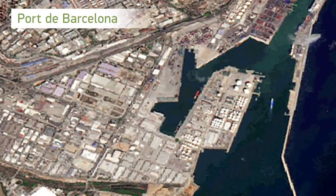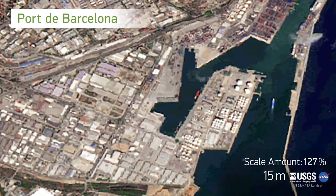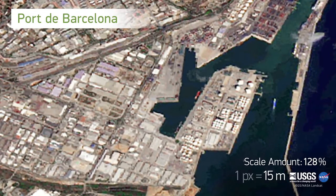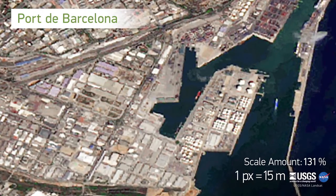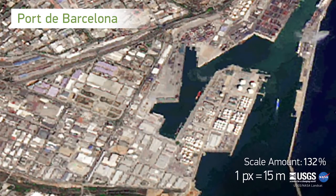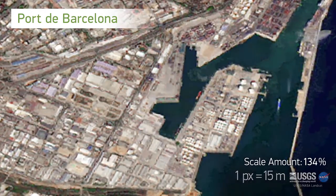This is a port off the coast of Barcelona in a 15-meter resolution Landsat image, so one pixel equals 15 meters squared. You can see the coastline very clearly, the marina, ports, roads, and buildings.